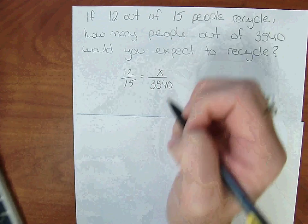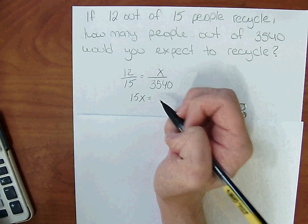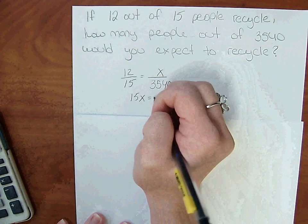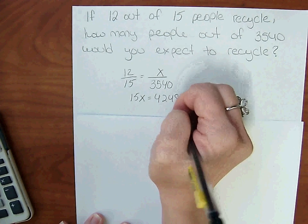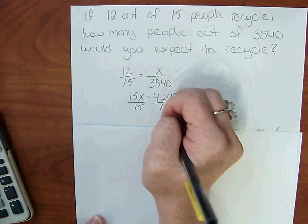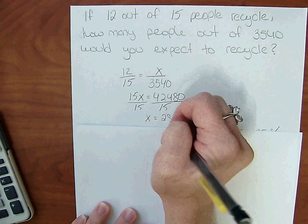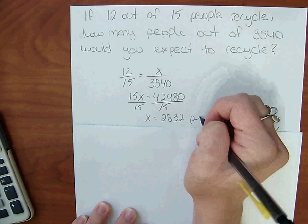x in the numerator. So 15x equals 42,480. Divide by 15, and we can expect 2,832 people to recycle.